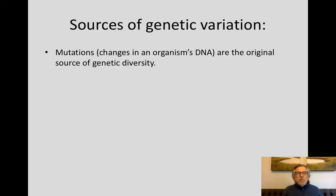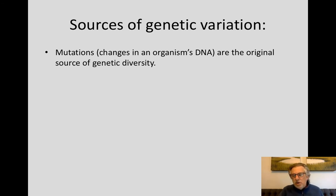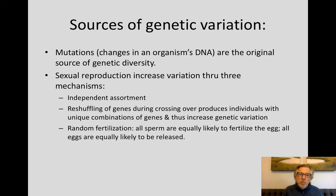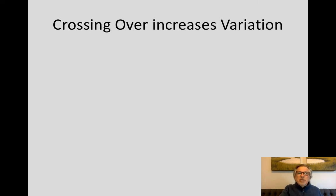Mutations are the original, ultimate source of genetic variation. As the sequence of nucleotides in a gene changes, the proteins and RNAs produced function slightly differently, and those that are beneficial will get selected for in the long run. Sexual reproduction increases variation through three different mechanisms: one is independent assortment; second is crossing over, which produces individuals with unique combinations of genes on chromosomes; and third is the fact that any sperm and any egg are equally likely to be fertilized — there are no favored sperm or favored eggs.